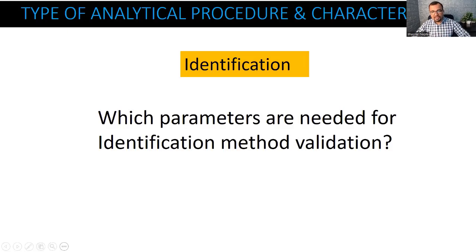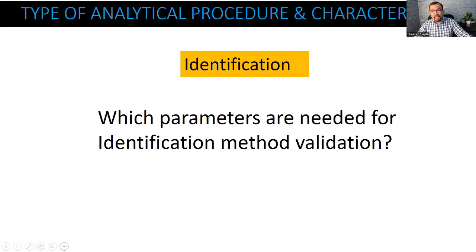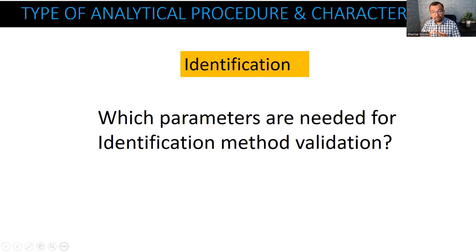Ravidra says specificity. Aisha says only specificity. Malesh says accuracy. Faruk says accuracy. Ranjit says specificity. Budapu says LOD. Raju says accuracy. Saili says specificity. So I think people are talking about at least three to four different parameters. Someone mentions precision also. Ravidra says peak purity. Let us now understand, as part of identification by FTIR.